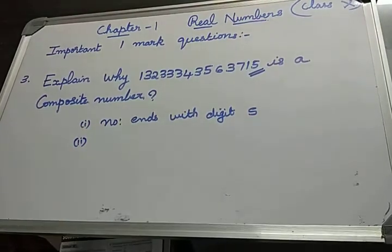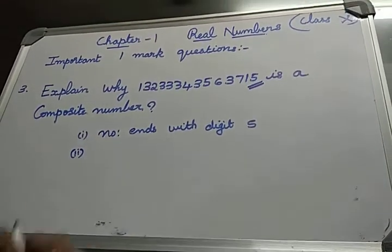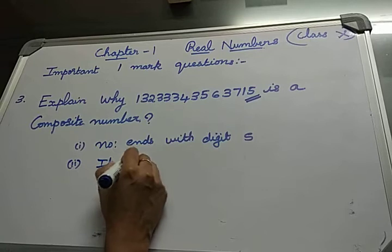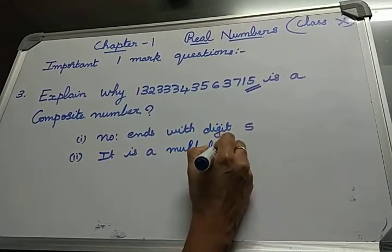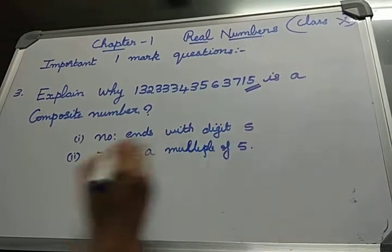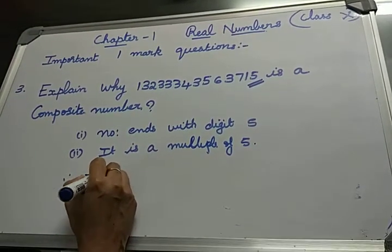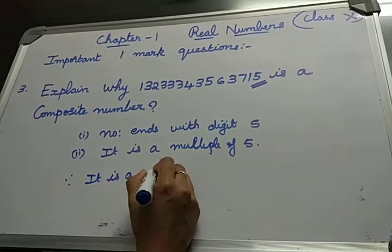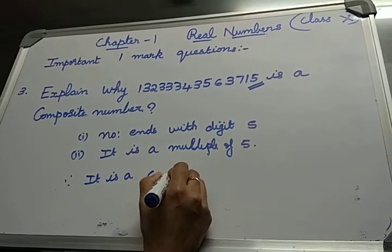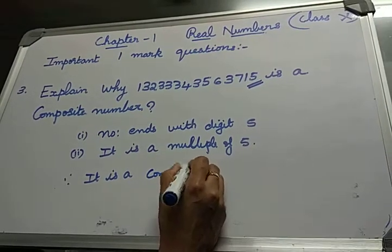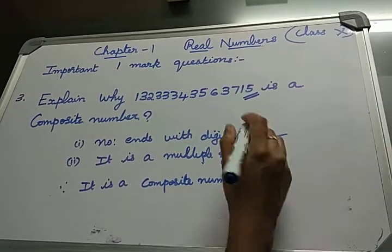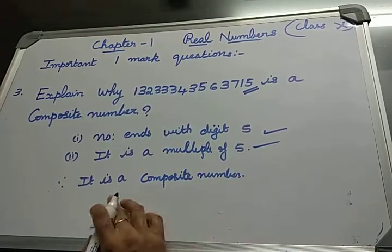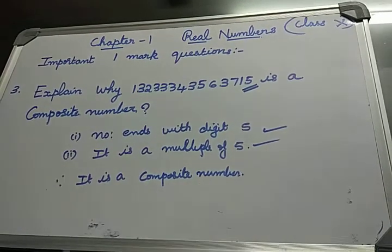If it ends with digit 5, surely it is a multiple of 5. Therefore we can say it is a composite number with more than 2 factors. You only need these 2 steps: the number ends with 5, therefore it's a multiple of 5, and thus a composite number.